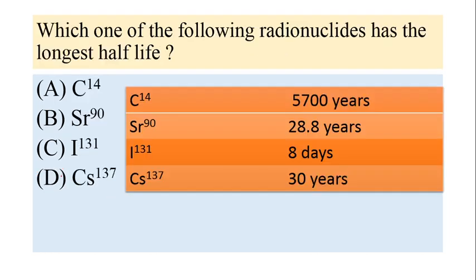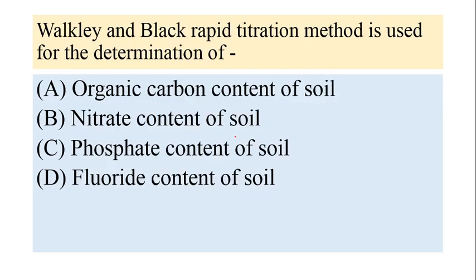Which one of the following radionuclides has the longest half-life? The options include Carbon-14, Strontium-90, Iodine-131, and Cesium-137, with their respective half-lives mentioned. Carbon-14 has the longest half-life among all of these given options.